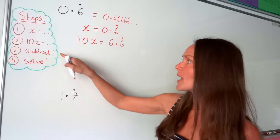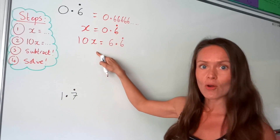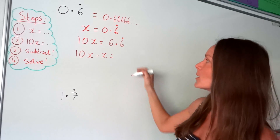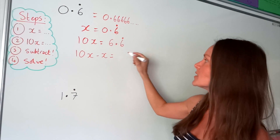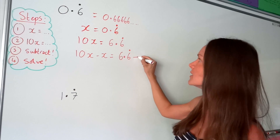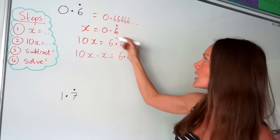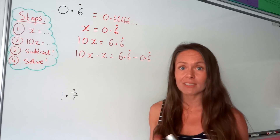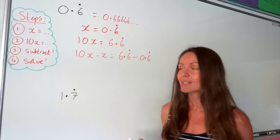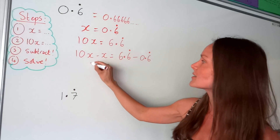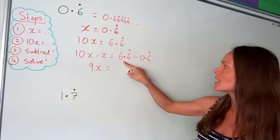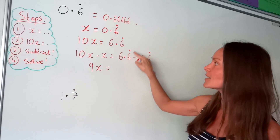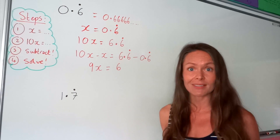Step number three, we have to subtract this 1x from 10x. So I'm going to write that out and show all my working out. So I'm doing 10x, which is 6.6 recurring, minus the 1x, which is our original value, 0.6 recurring. By doing this, we're getting rid of those recurring decimals. 10x minus 1x is 9x. And on the right-hand side, if I minus the 0.6 recurring, it gets rid of those recurring decimals and I'm just left with the whole number 6.